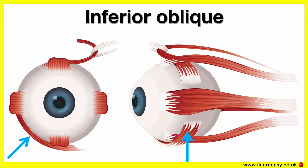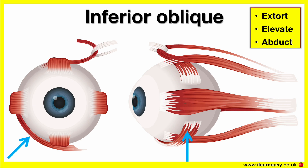The origin of the inferior oblique is the maxillary bone, the anterior orbit, then it inserts on the sclera. The insertion of the inferior oblique is the inferior lateral part of the sclera. Its actions are that it extorts, elevates, and abducts. This means it helps us to look up and out.